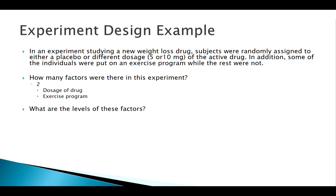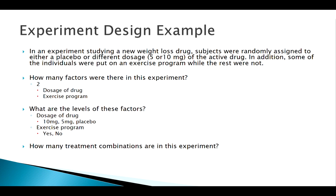What are our levels? For our first factor, dosage of drugs, there are three levels. For the exercise program, they're either on it or not — yes or no. So how many treatment combinations are there? There are two levels of the exercise program and three levels of the drug, making this what we might call a two-by-three factorial experiment. There are actually six treatment combinations.